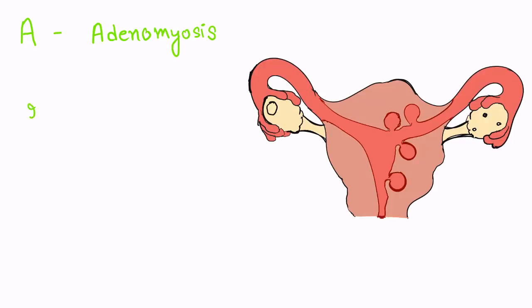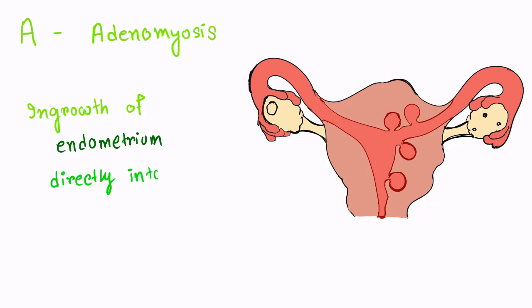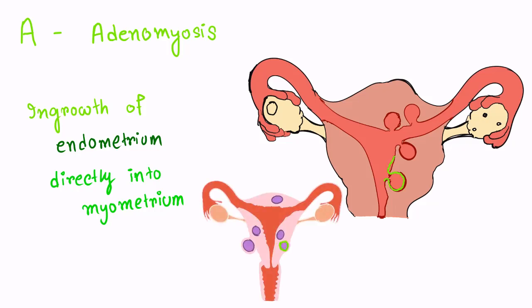A is for adenomyosis. This is a condition where there is ingrowth of endometrium directly into the myometrium. In the picture you can see the endometrium has grown into the myometrium. Don't confuse it with fibroid, because fibroid is the muscle tumor that grows in the wall of the uterus. This is fibroid, and this is adenomyosis.